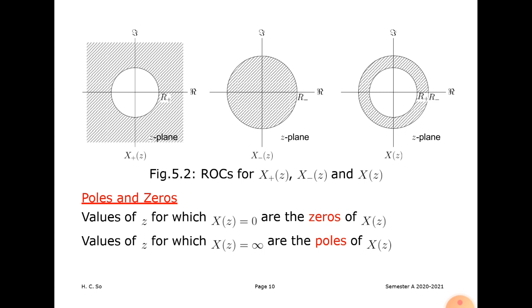The ROC applies for x+(z), x−(z), and x(z). This is the basic concept of the ROC for both causal and anti-causal signals. A causal signal depends only on the present and past values, while an anti-causal signal depends on future values of the signal.